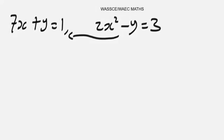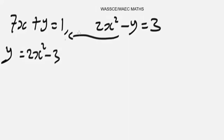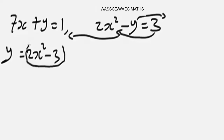This is very important: when you rearrange the quadratic equation, y will be 2x² - 3. So when you arrange this, what I did was take the y over to one side — changing its sign to positive — and bring the constant to the negative side. Once you have this, substitute the expression for y into the linear equation.